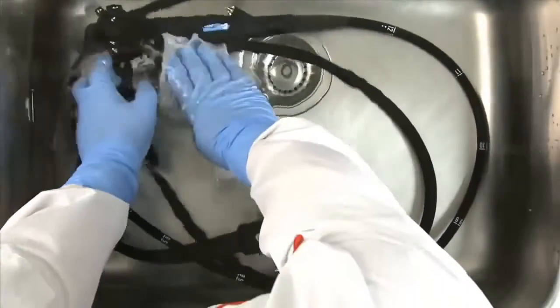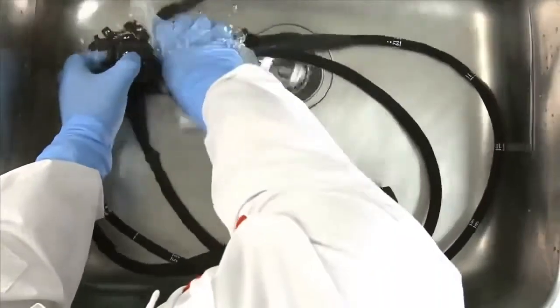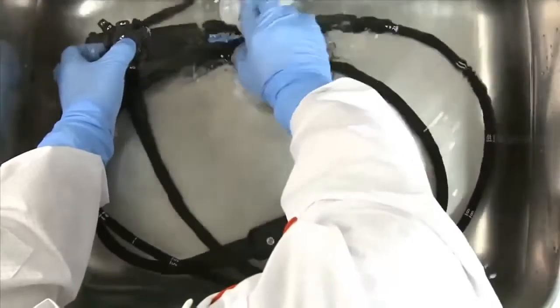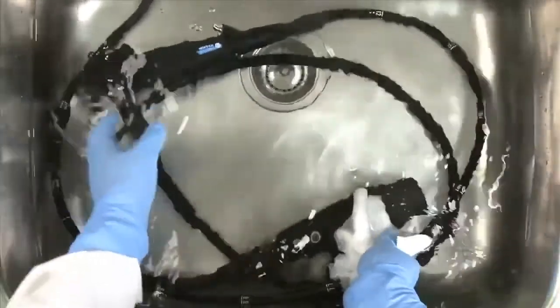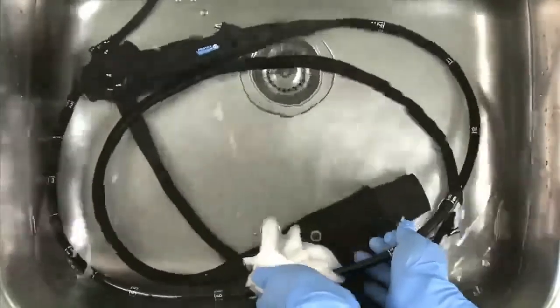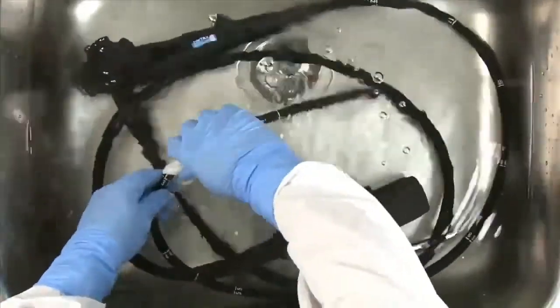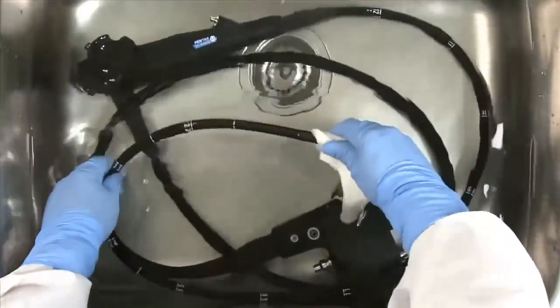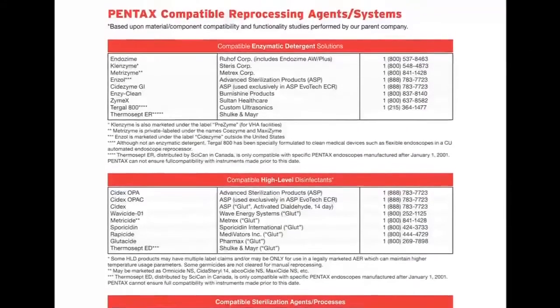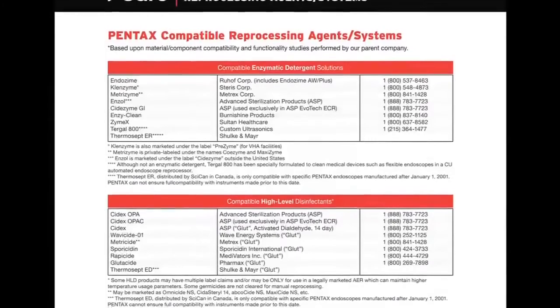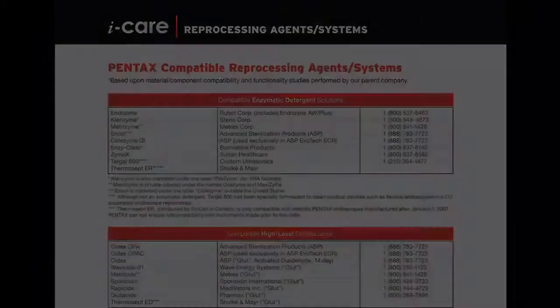While soaking, wipe the endoscope with a lint-free cloth from the control body to the distal end and down the umbilical to the PVE connector. Do not pull the flexible insertion tube or umbilical through your hands. To know which appropriate enzymatic solution to use, always refer to the Pentax-compatible reprocessing systems agent document.